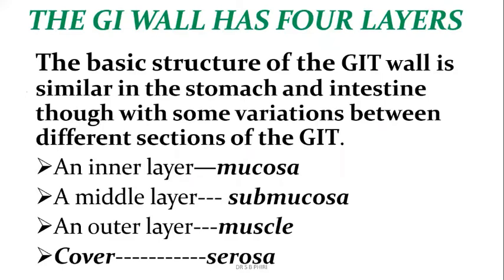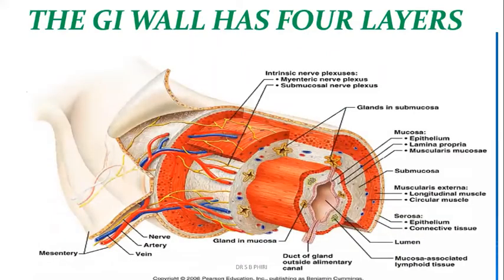The muscularis externa consists of longitudinal and circular muscle layers. In the stomach there are three layers of muscles: the innermost oblique muscle, the circular layer, and the longitudinal muscles. The outermost layer is the serosa, composed of epithelium and connective tissue. In the neck region the esophagus has adventitia instead of serosa, which anchors it to surrounding structures.